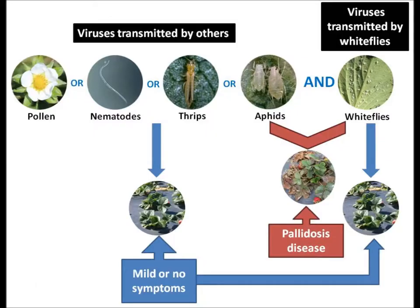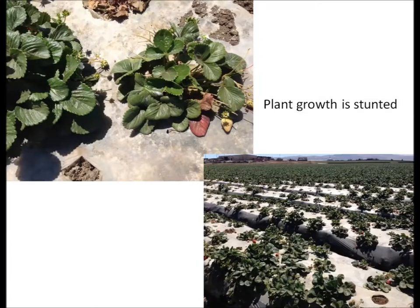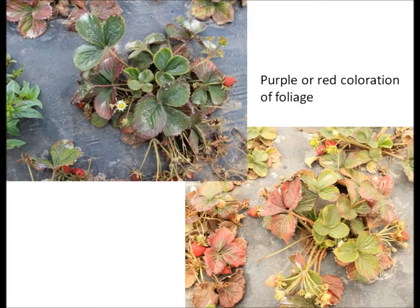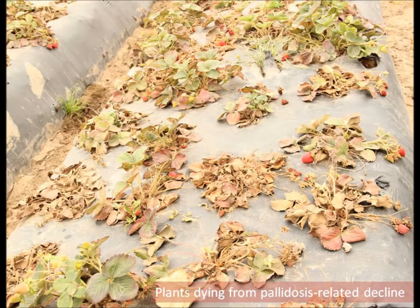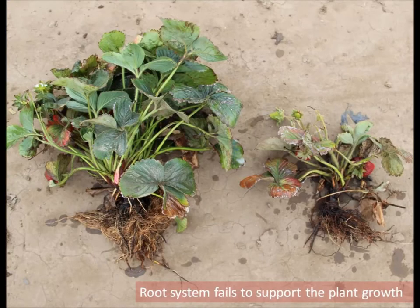Pallidosis virus can be latent in production fields and generally does not produce severe symptoms without synergistic interaction with other viruses. Symptoms include stunted plant growth, purple or red coloration especially of older leaves, and brittle roots. As infection progresses, leaves dry out and plants eventually die as the affected root system fails to supply the nutrients required by the plant.